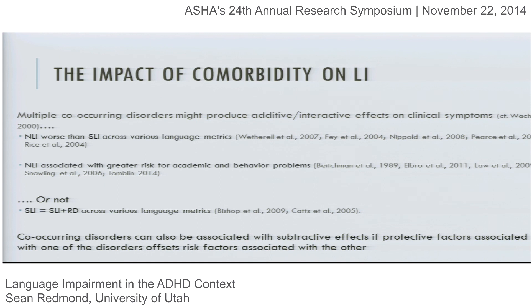Another comorbidity given treatment in our literature is language impairment and reading disability. Studies looking at the language abilities of kids who also have a reading disability find no difference in severity or profiles for kids with language impairment with or without reading disability. There's a third possibility: subtractive effects when co-occurring disorders interact, which can happen if a protective mechanism associated with one disorder offsets the risks of the other disorder.